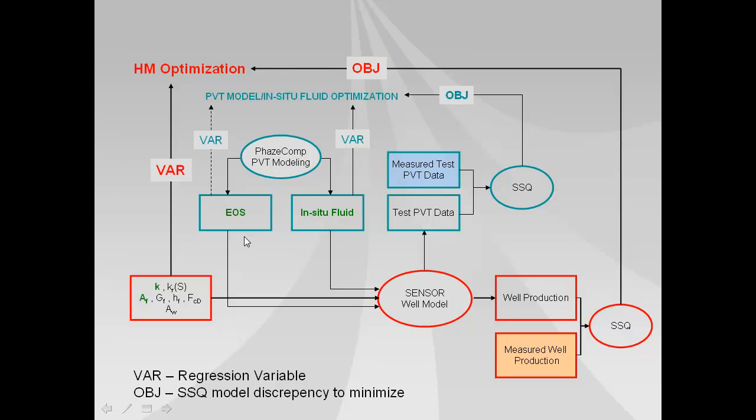Once that fluid model system has been determined then it's passed out to the well model using compositional and black oil well model description which has reservoir properties as input as well. In particular we're modifying the permeability and fracture area. That is then producing production rates and production wellstreams that are compared with the measured well production data.